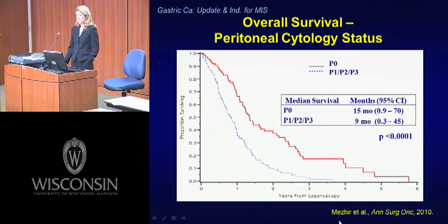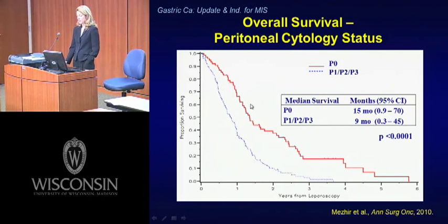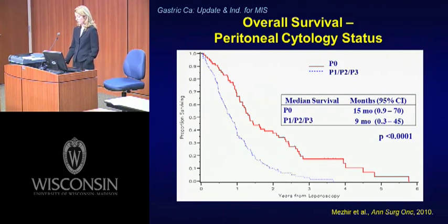A paper by James Mesier, published in 2010 in Annals of Surgery, showed that patients with cytology-only disease — no visible tumor deposits but positive cytology — had a median survival of 15 months, compared to 9 months for those with visible tumor deposits. This further emphasizes how important cytology is as a prognostic and staging tool.